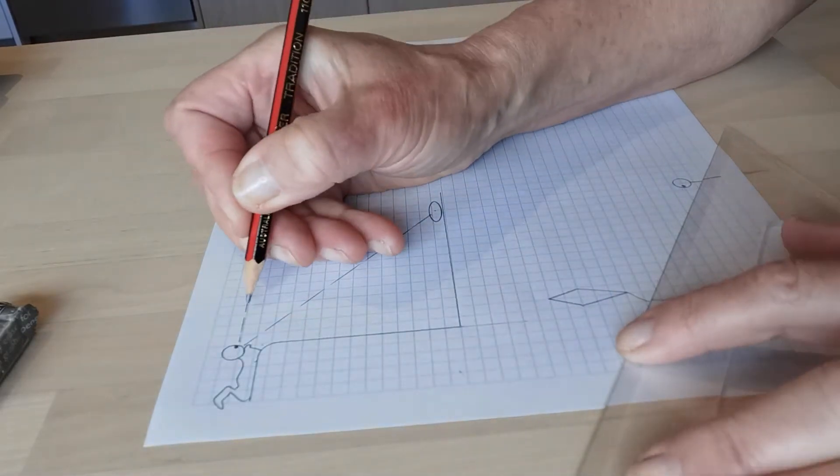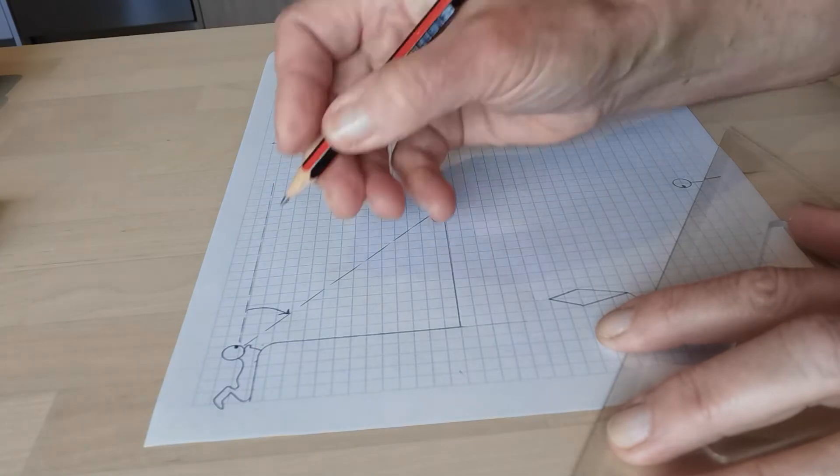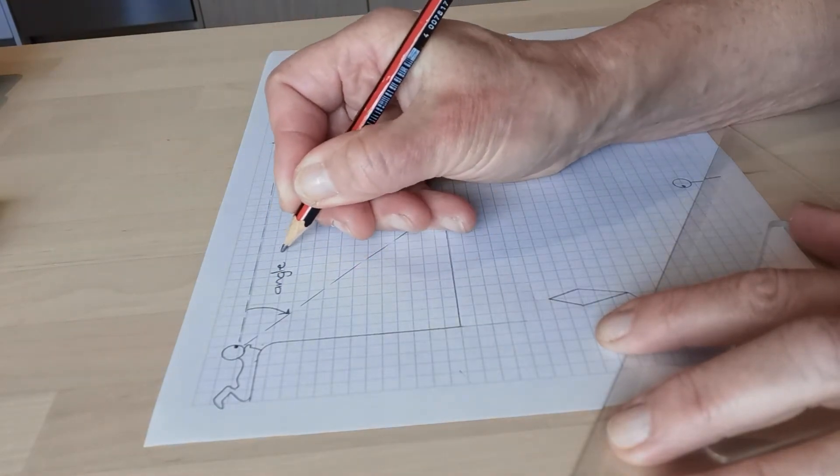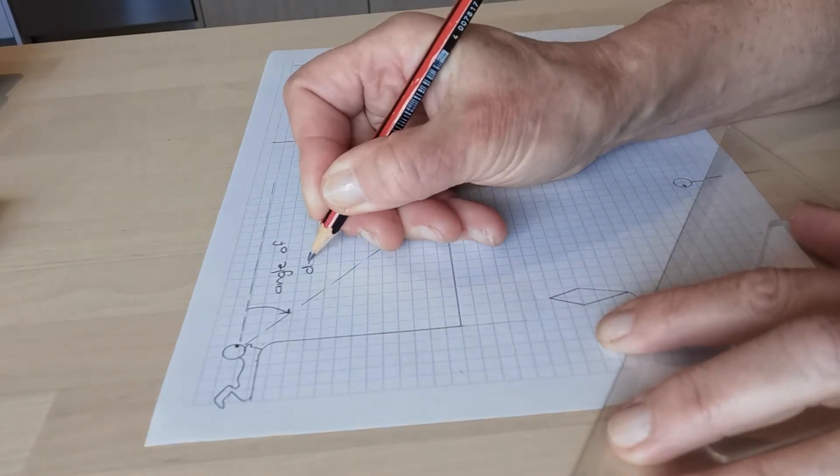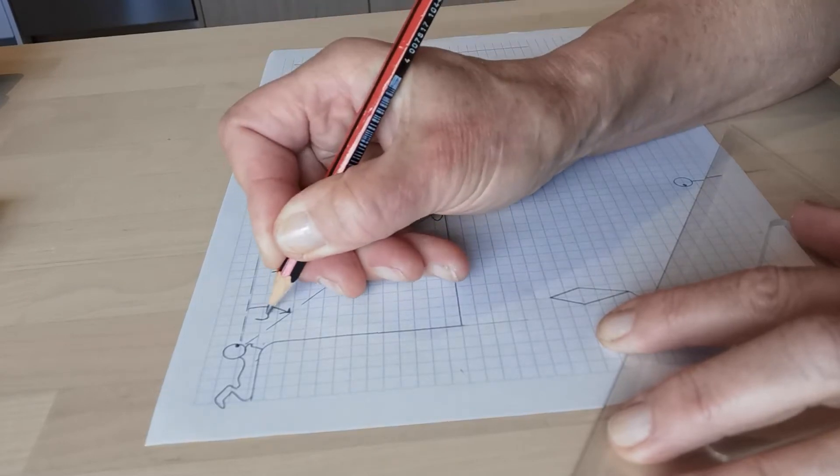So you're looking down from the horizontal so we call that an angle of depression. So that's an angle of depression and we'll call it theta.